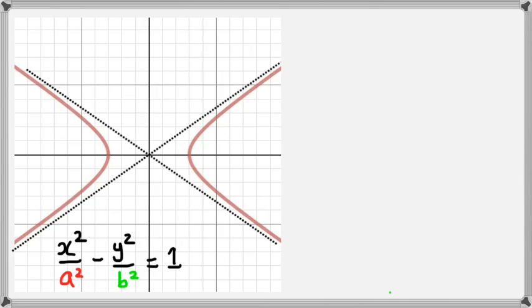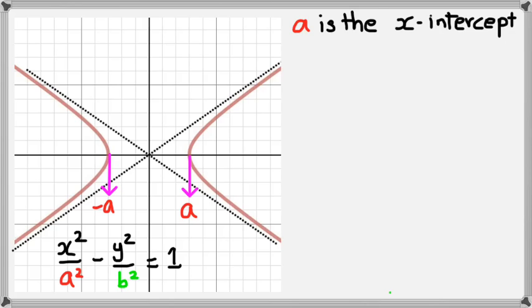Okay, so let's start breaking down some of these characteristics of a hyperbola. First off, we're going to look at what a does. a is actually the x-intercept of the hyperbola. And as you can see, so there's positive a, and there will be negative a.